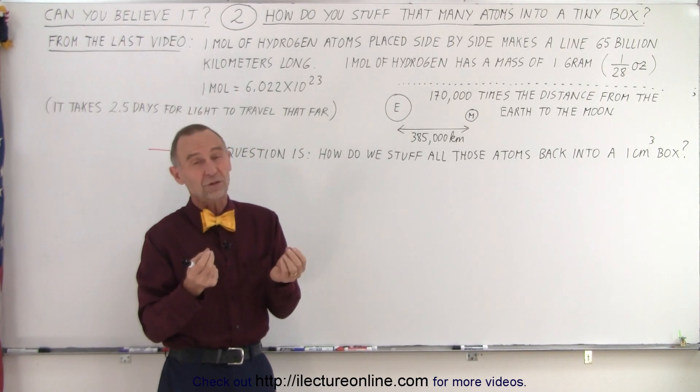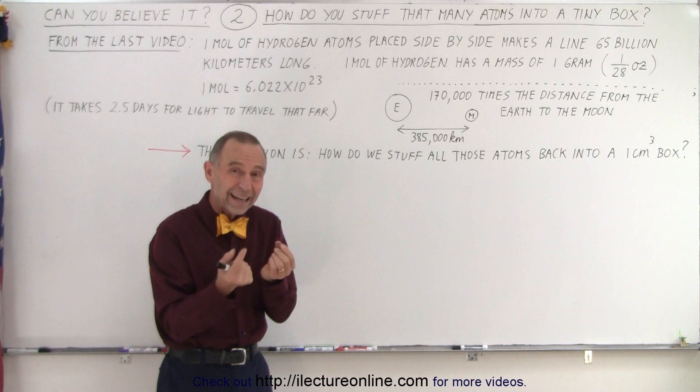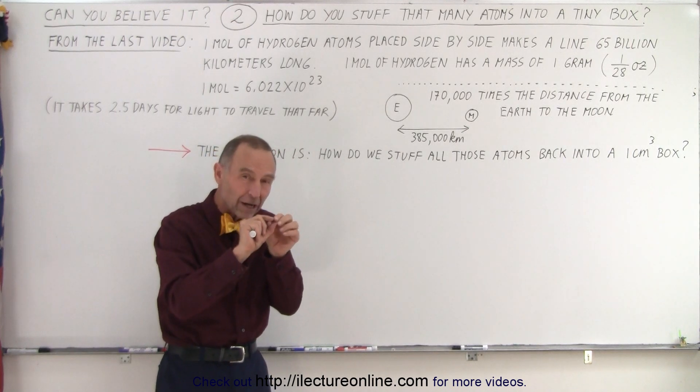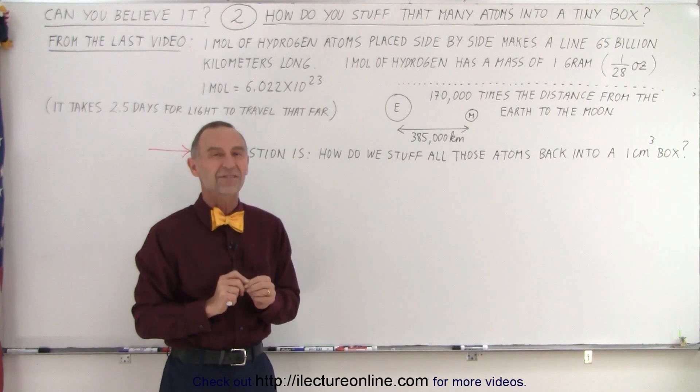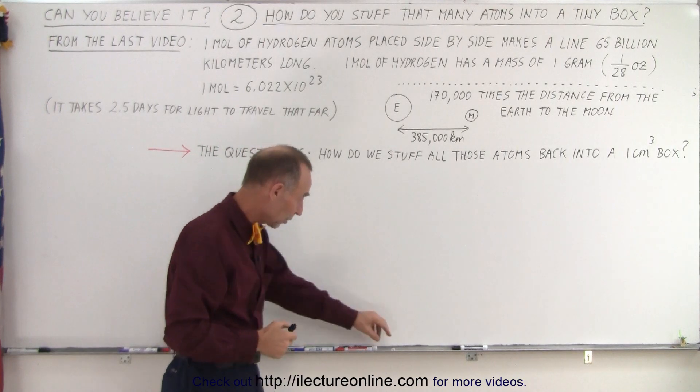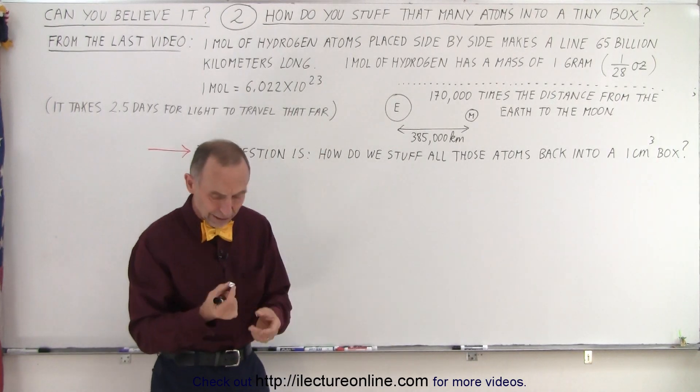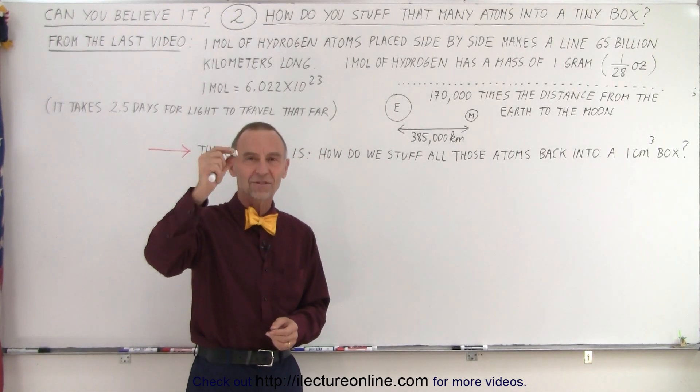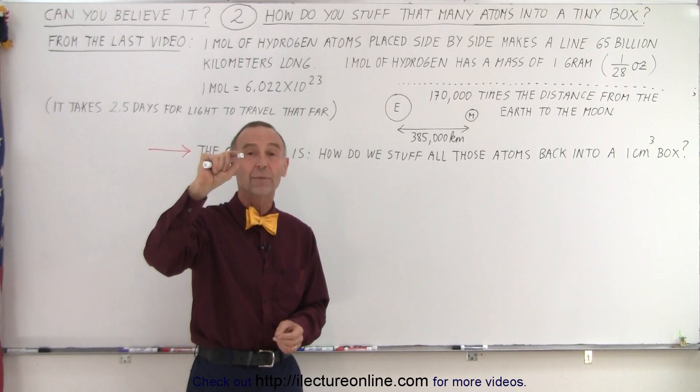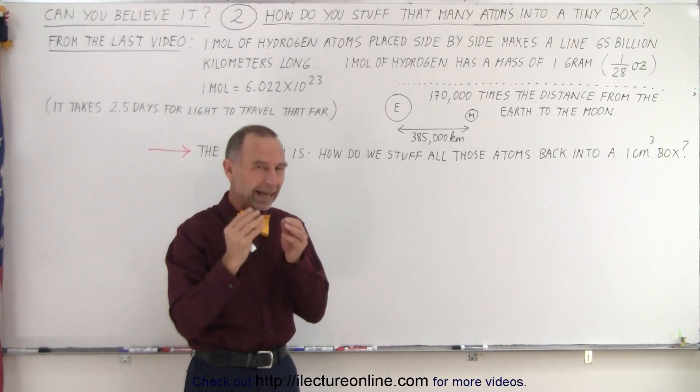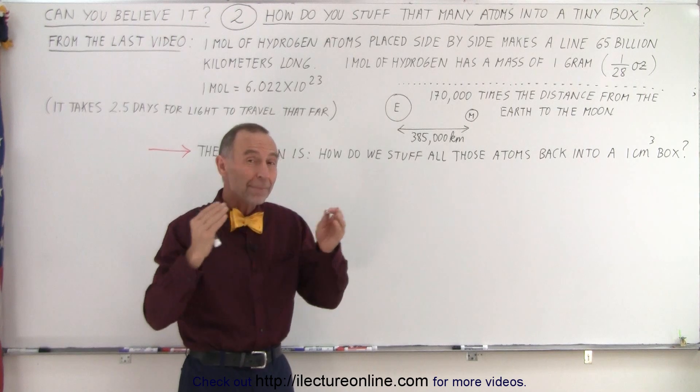But now the question is: how do we take all those atoms and stuff them back into a little box, about a cubic centimeter? To give you an idea what a cubic centimeter looks like, it looks like a small die like this. This die has about the volume of a cubic centimeter.